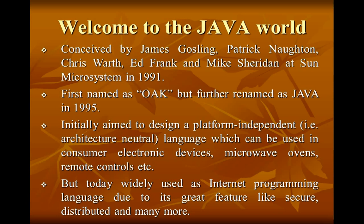We are talking about the Java world that was conceived by James Gosling, Patrick Naughton, James Gosling, Ed Frank, and Mike Sheridan at Sun Microsystems in 1991, first named Oak, and released in 1995. Initially, it was designed to focus on consumer electronic items like microwave ovens, remote controls, and home appliances. But today, Java is widely used as an internet programming language.